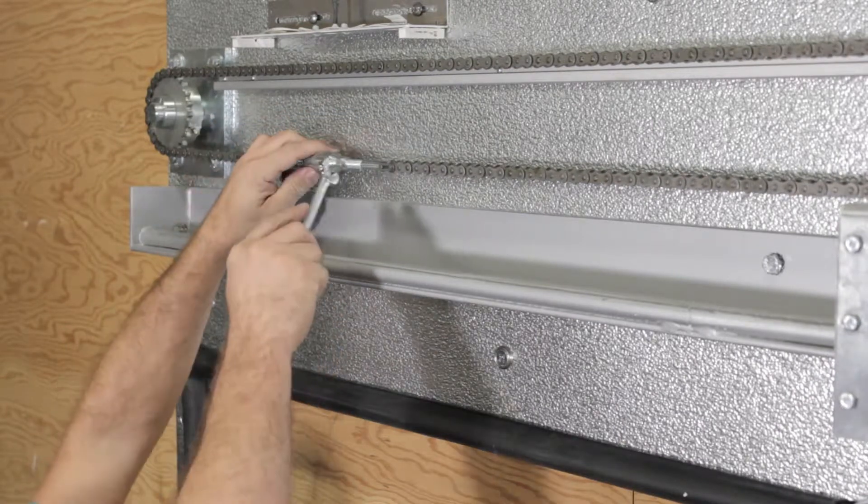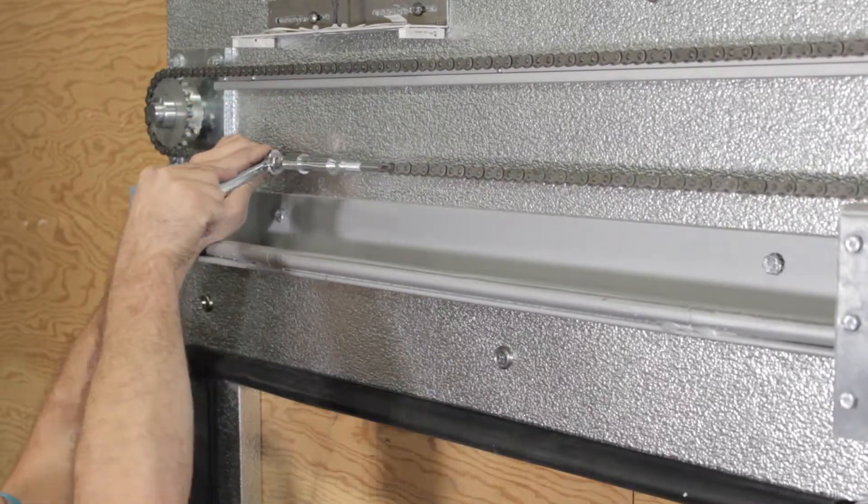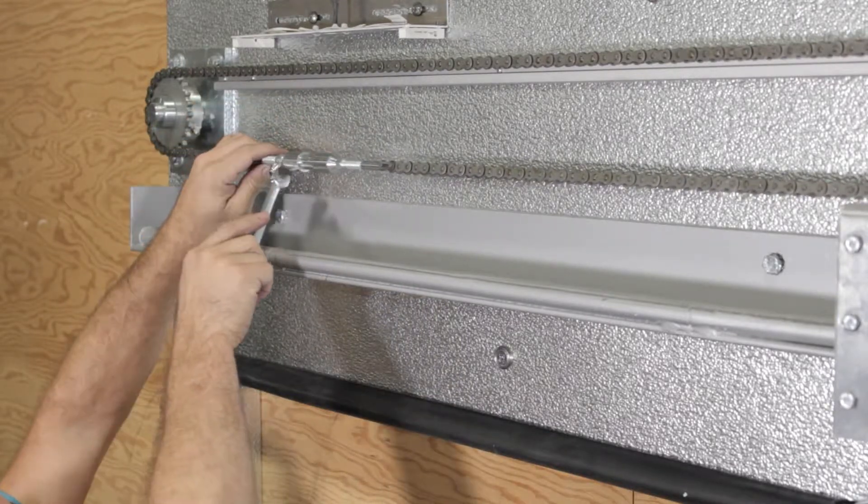When the drive chain is properly adjusted, use the wrench to tighten the lock nuts on the threaded rods at each end of the drive chain bullet.